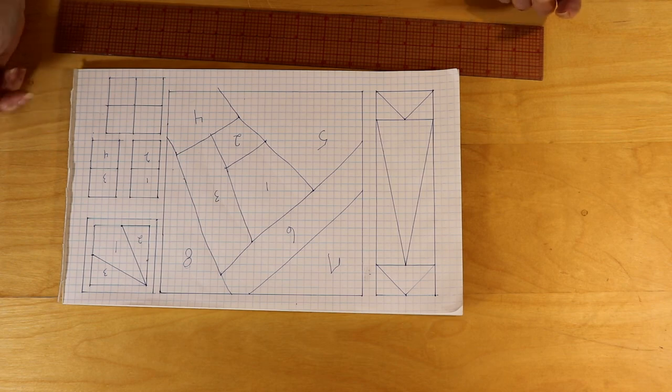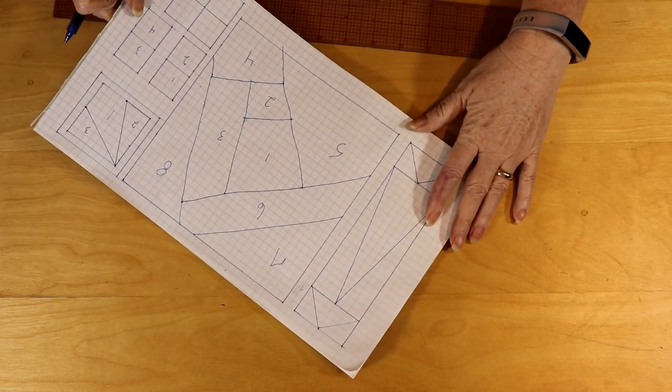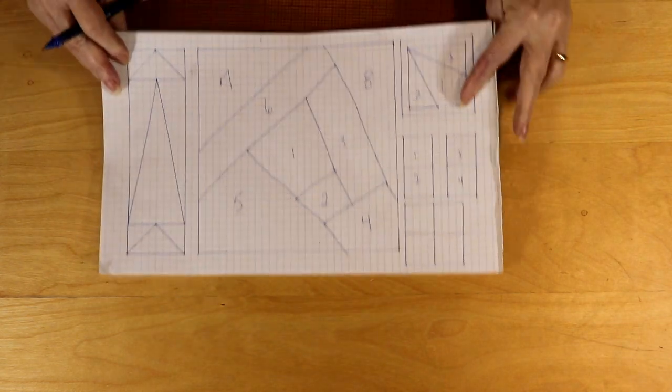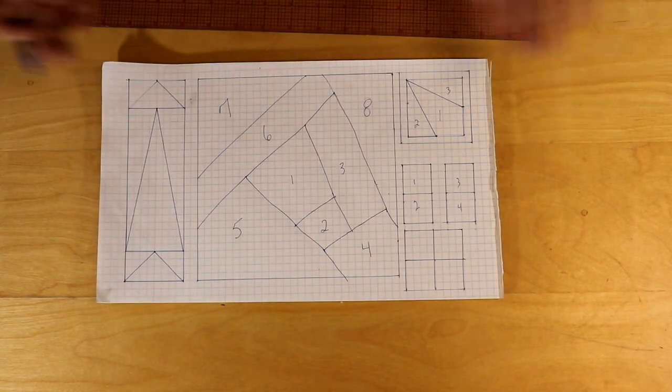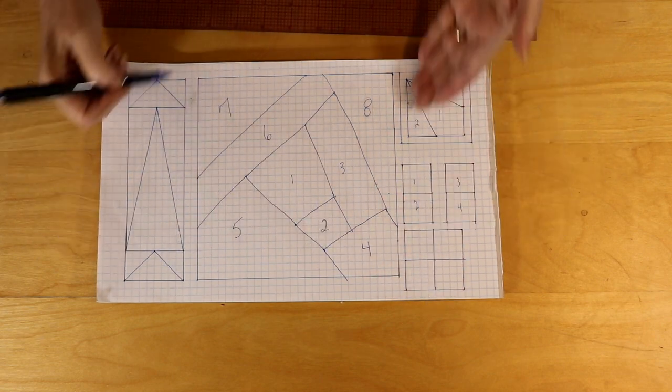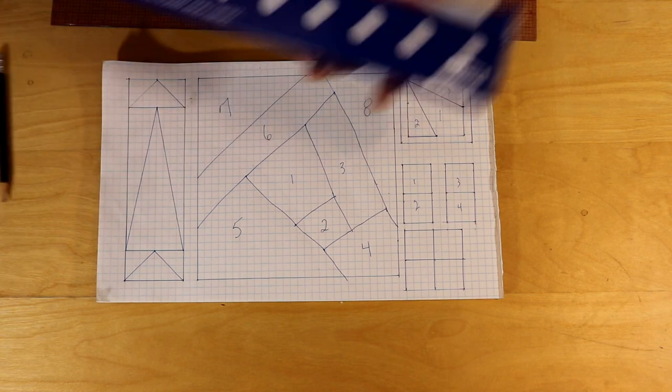Very simple, very quick. And you're not following any line, you're just making it how you want to draw it. Now of course again, you would put a quarter inch seam allowance around the outside.